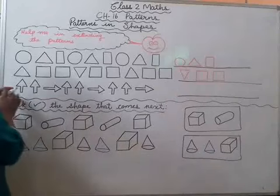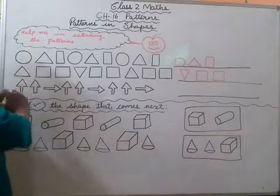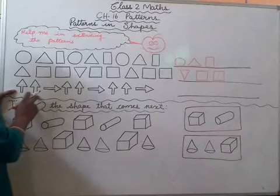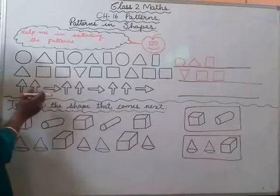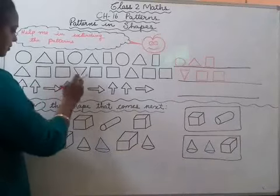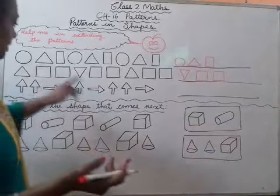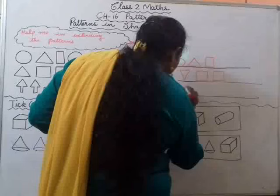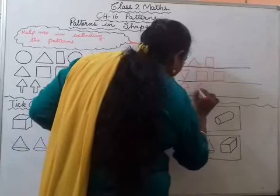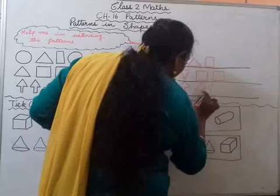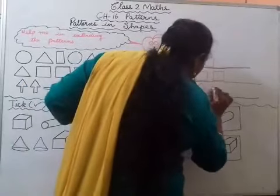Next — what are these called? Arrows. Ek ulta, ek sida hai. Straight arrow, straight arrow — do baar hai. Then sleeping wala arrow hai. Sleeping matlab aise hi hai. Then straight arrow, straight arrow, then sleeping arrow. Straight, straight, then sleeping. What will be the next one? Straight arrow, straight arrow, then it will be a sleeping arrow.